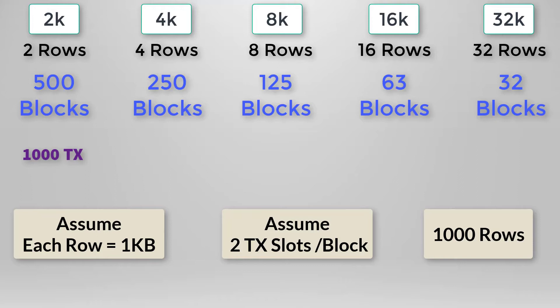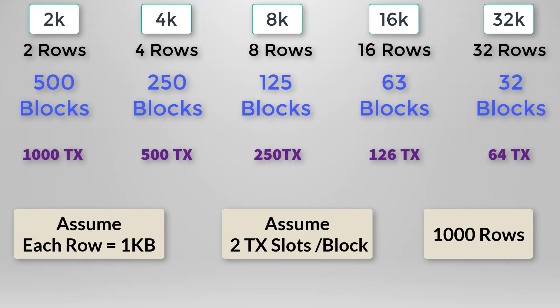With 4K blocks, you still have two transaction slots but only 250 blocks, giving only 500 transaction slots. With 16K blocks, only 125 transaction slots. And with 32K blocks, only 64 transaction slots total. This means if you need heavy concurrency — allowing multiple users to manipulate multiple rows simultaneously — then 2K blocks give you the maximum concurrency.